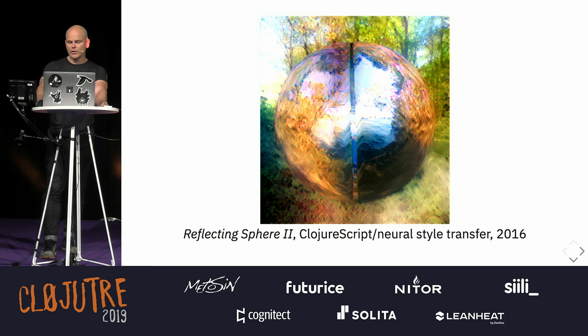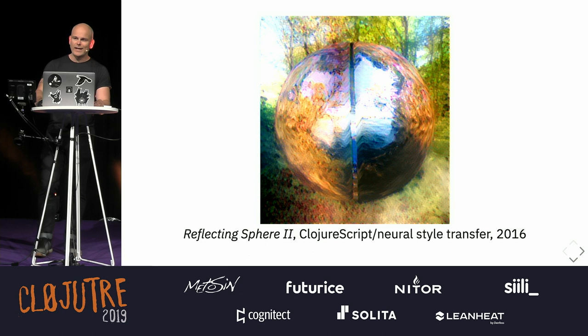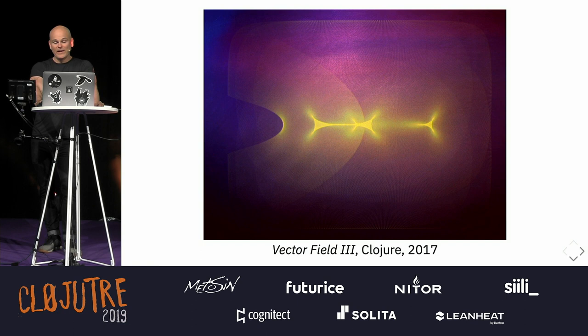From the same year, we have this one — also science fiction inspired — where I used ClojureScript and three.js to render a kind of photorealistic orb floating in the forest, and then wrote some code to do neural style transfer to turn it into something like a watercolor. This next one is taking some equations from physics, vector fields, and applying false color to them to make a kind of decorative arts project.